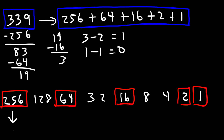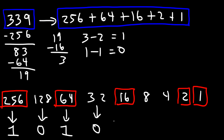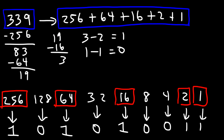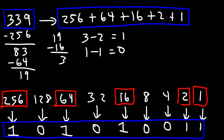Now let's write the numbers. We have a 256. We do not have a 128. We do have a 64. We do not have a 32. We have a 16. And since we don't have an 8 or a 4, we're going to write a 0. We do have a 2 and a 1. So a 1 means on or yes, and a 0 means off or no. So 339 is equal to 101010011.